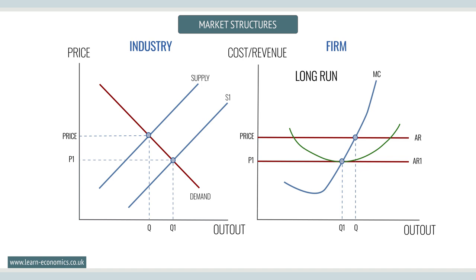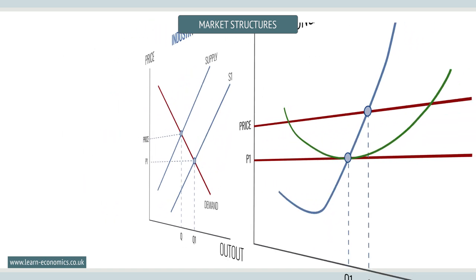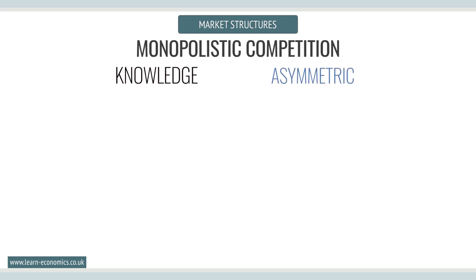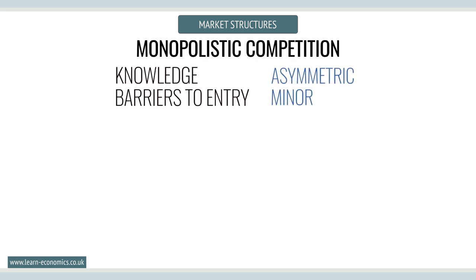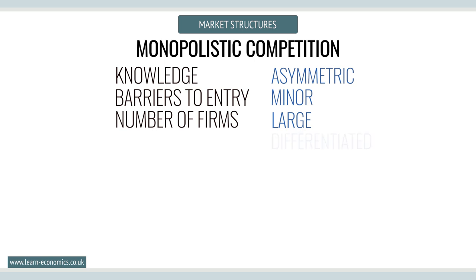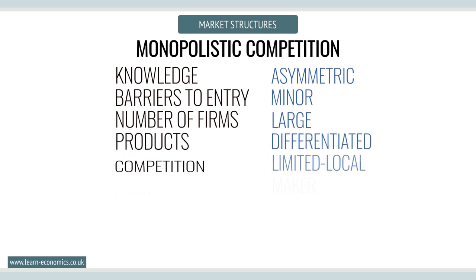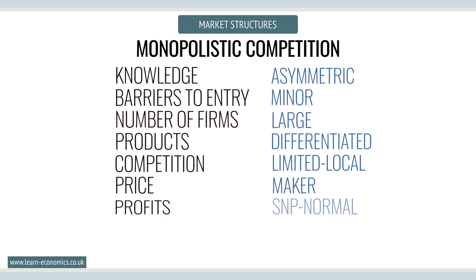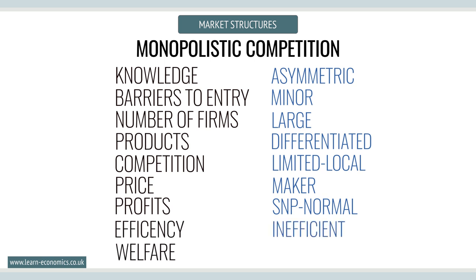For monopolistic competition, knowledge is only partial and asymmetric. Minor barriers to entry exist. There are large numbers of independent firms. Products are differentiated. Firms are price makers and can vary prices. Supernormal profits are available in the short run but not the long run. Firms are not allocatively or productively efficient in the short run and long run, and there is a welfare loss as price is greater than marginal cost.